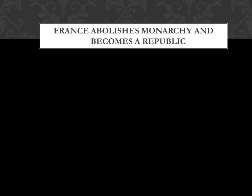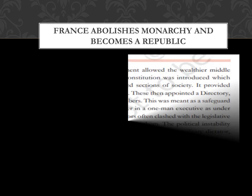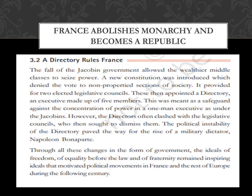Here we have the topic: France Abolishes Monarchy and Becomes a Republic. Most of this topic has been explained in the previous video. Here we will discuss about A Directory Rules France. France was ruled by a directory for almost 4 years. After the fall of the Jacobin government, the wealthier middle class became powerful and seized power.